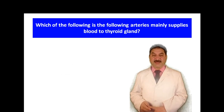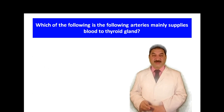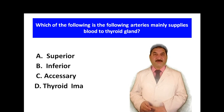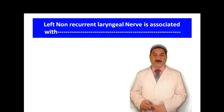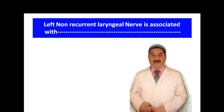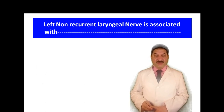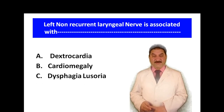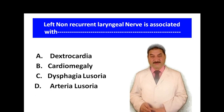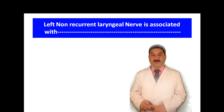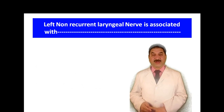Which of the following arteries mainly supplies blood to the thyroid gland? Superior thyroid, inferior thyroid, accessory, or thyroid ima artery? The inferior thyroid artery is the main blood supply of the thyroid gland. Left non-recurrent laryngeal nerve is associated with which condition? A: dextrocardia; B: cardiomegaly; C: dysphagia lusoria; D: arteria lusoria. The left recurrent laryngeal nerve is associated with dextrocardia.